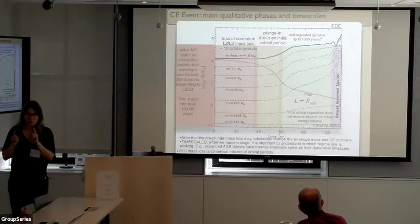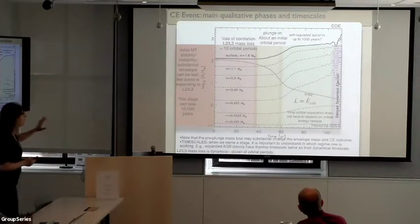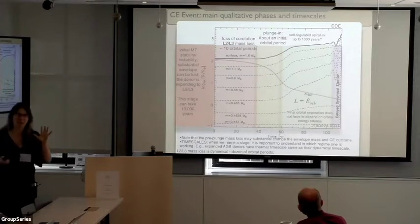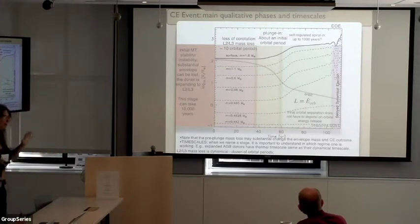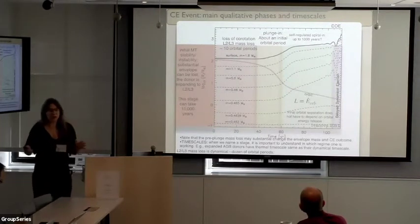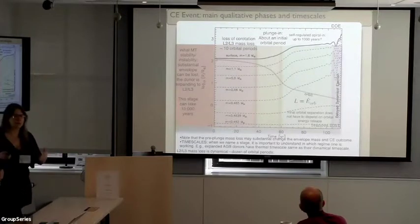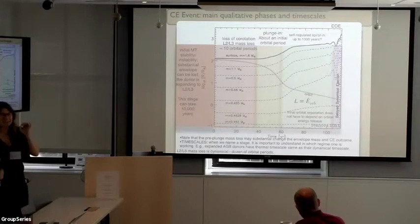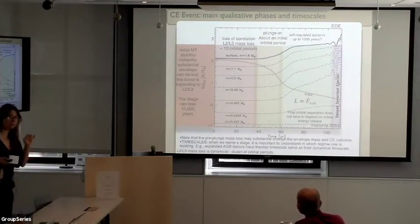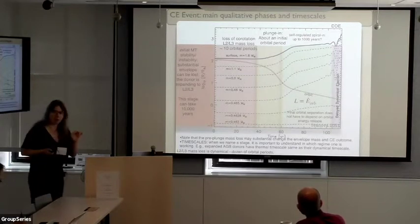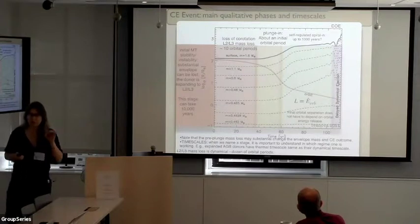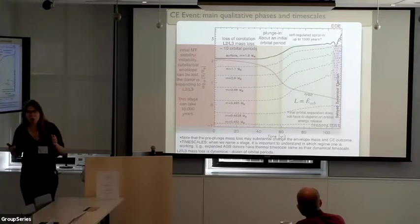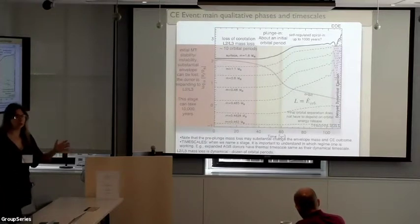The plunge-in stage is only a part of common envelope evolution. It all starts when the initial mass transfer begins, and there is no such thing as immediate instability. The instability can develop on a timescale of 10,000 years. For 10,000 years, mass transfer can proceed at a rate of 10⁻⁴ to 10⁻³ solar masses per year — higher than the thermal timescale rate — but common envelope evolution will not have started yet. A significant mass of the initial envelope will be lost during that phase, which will dramatically change the outcome if you invoke the alpha formalism later.